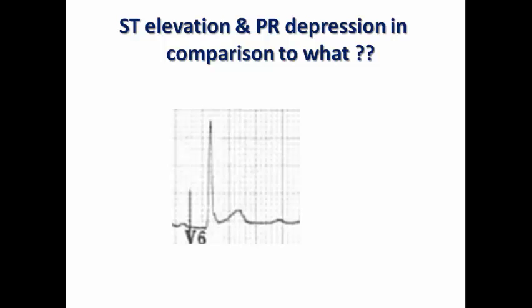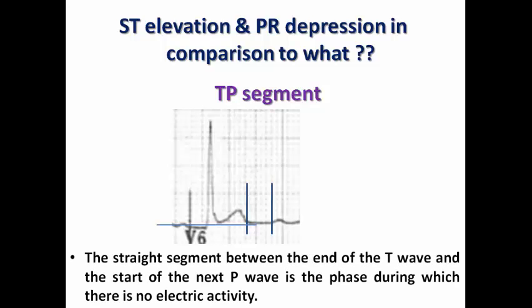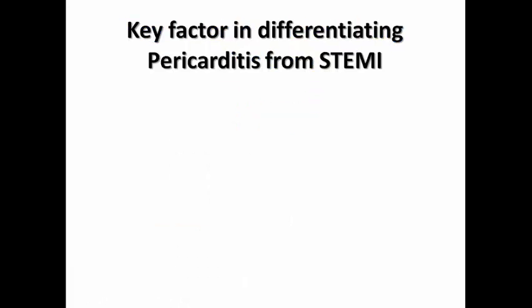A common question: when we say ST elevation and PR depression, in comparison to what? The answer is the TP segment — the segment in which there is no electrical activity, occurring after the end of ventricular depolarization and before the start of atrial depolarization. This straight segment between the end of the T wave and the next P wave is the reference to decide whether ST or PR segments are elevated or depressed.